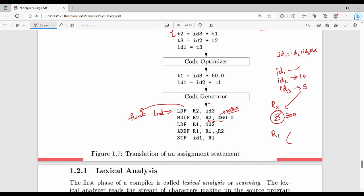Next step is load float id2 value into R1. We load id2 value 10. Next step is add float. The destination is R1. What do we add? R1 and R2. R1 is 10, R2 is 300. 10 plus 300 is 310, so R1 becomes 310. Finally, store float id1 with value R1. This is the overall example.